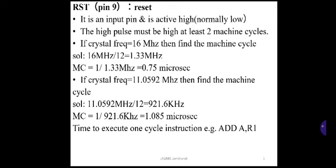For the 8051 microcontroller, the commonly used crystal oscillator frequency is 11.0592 MHz. Dividing 11.0592 MHz by 12 equals 921.6 kHz. Machine cycle equals 1 divided by 921.6 kHz, which equals 1.085 microseconds. This means the time required to execute one machine cycle instruction is 1.085 microseconds. For example, the instruction ADD A, R1 is a one-byte instruction that executes in 1.085 microseconds.